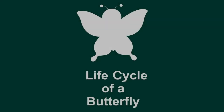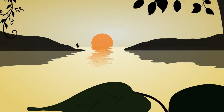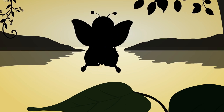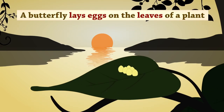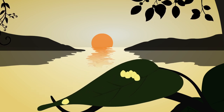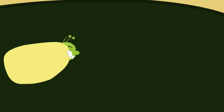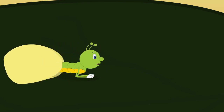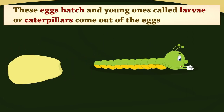Our topic for today is Life Cycle of a Butterfly. A butterfly lays eggs on the leaves of a plant. These eggs hatch and young ones called larvae, or caterpillars, come out of the eggs.